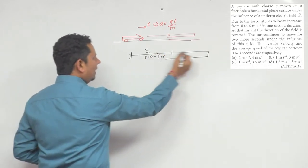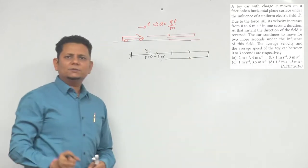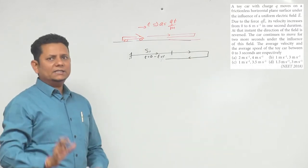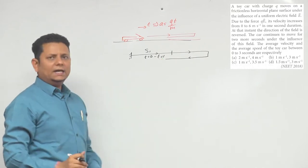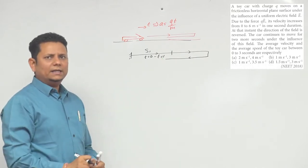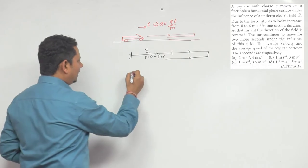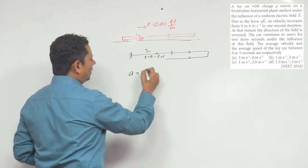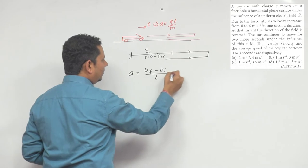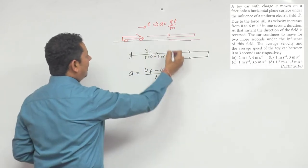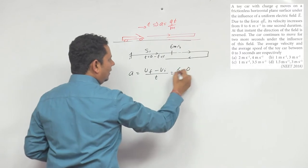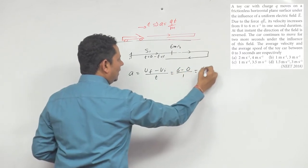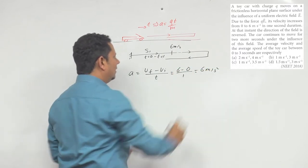The distance and displacement between these phases will be different. We need to find the average velocity. The acceleration is V final minus V initial divided by time taken. This gives us 6 minus 0 over 1, so acceleration equals 6 meters per second squared.